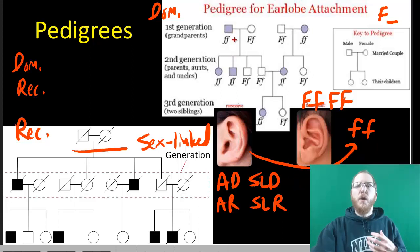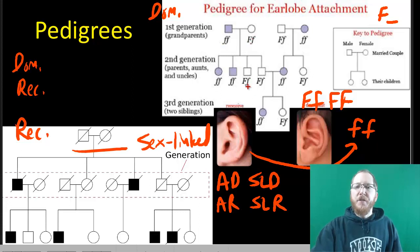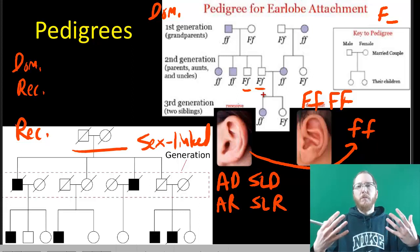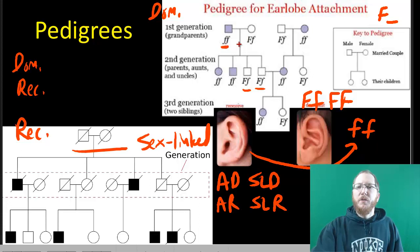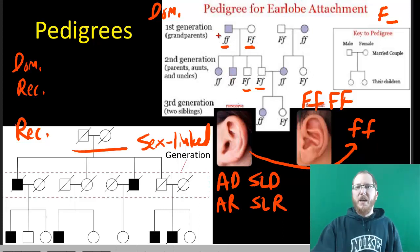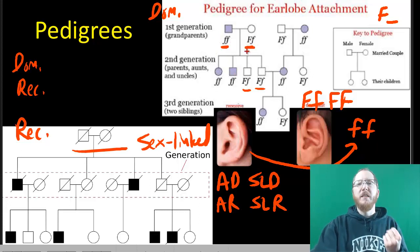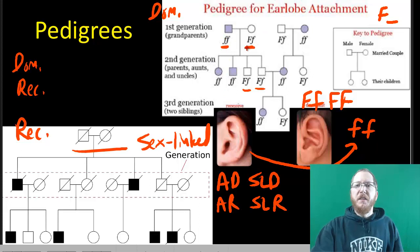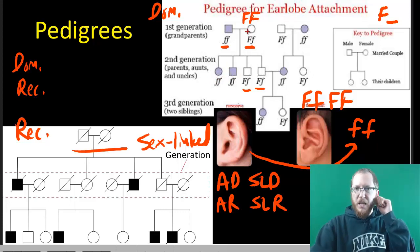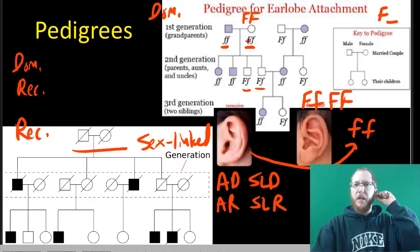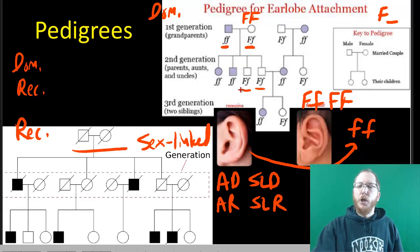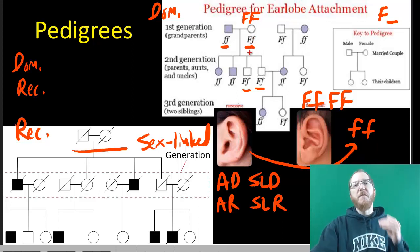Looking at pedigrees, we can also figure out genotypes. If I know one parent has to be homozygous recessive, then I know the offspring — even if they show the dominant phenotype — must be heterozygotes. If a homozygous recessive parent bred with a dominant individual and they had recessive children, this is essentially a test cross. To have recessive offspring, both parents must have at least one recessive allele. So because these kids are affected, that parent must be a heterozygote — if they were FF, none of the children could have attached earlobes.